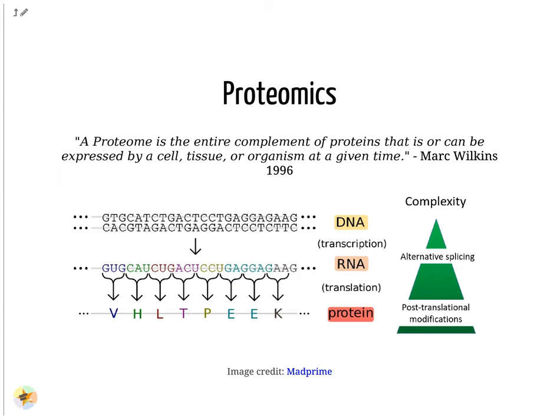Therefore, the proteome level shows a higher molecular complexity. The proteome is defined as the entirety of proteins expressed by a genome, or by a cell or tissue at a given time. The study of proteins is important as their identity and abundance is only partially predictable from DNA and mRNA information. This is due to alternative splicing, post-translational modifications, protein turnover and subcellular localization.